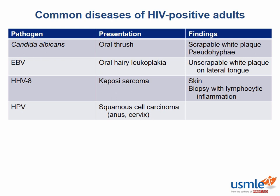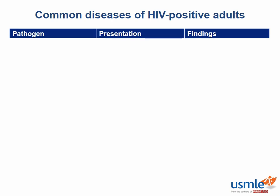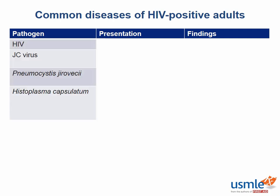The next important CD4 count, or level, is 200 cells per millimeters cubed. Four pathogens in this group are important to know: the human immunodeficiency virus, the JC virus, Pneumocystis jirovecii, and Histoplasma capsulatum. Wait — doesn't HIV cause AIDS? What do you mean that it can also be an opportunistic infection? Well, yes, it's quite interesting.